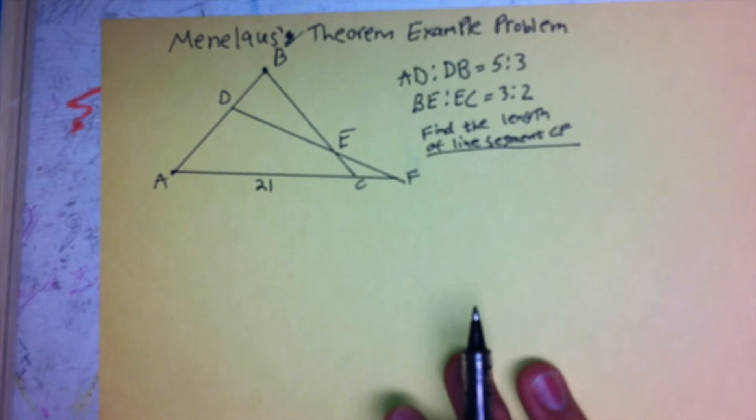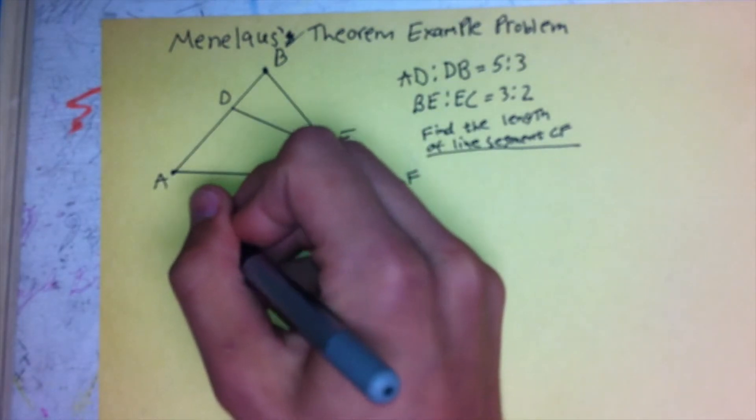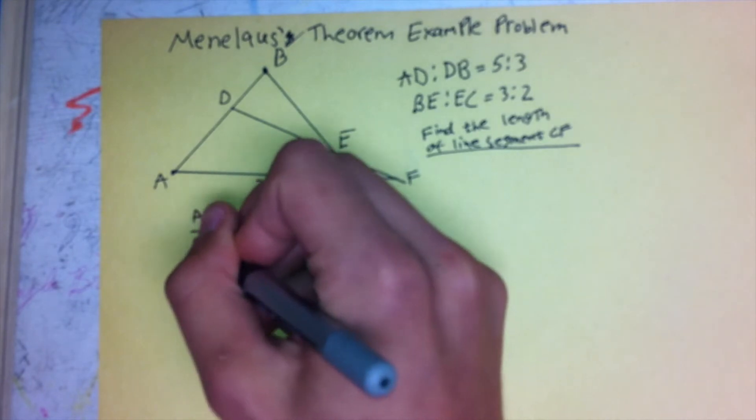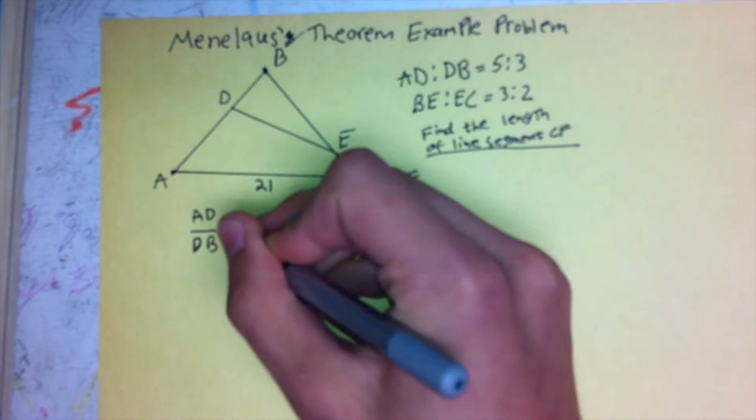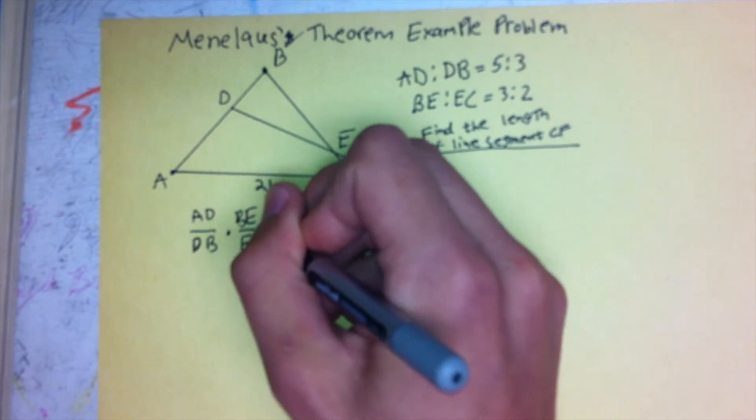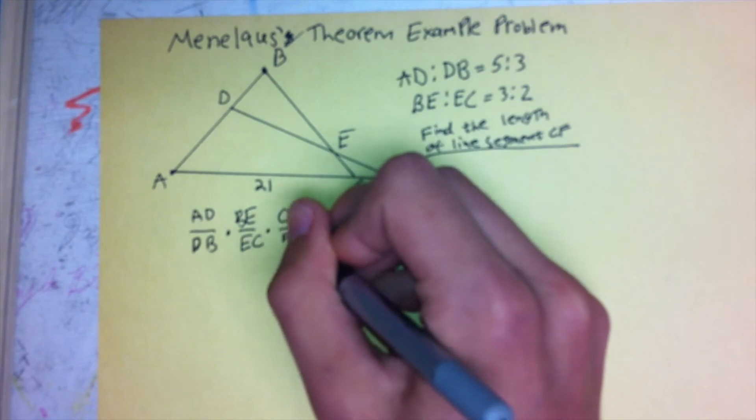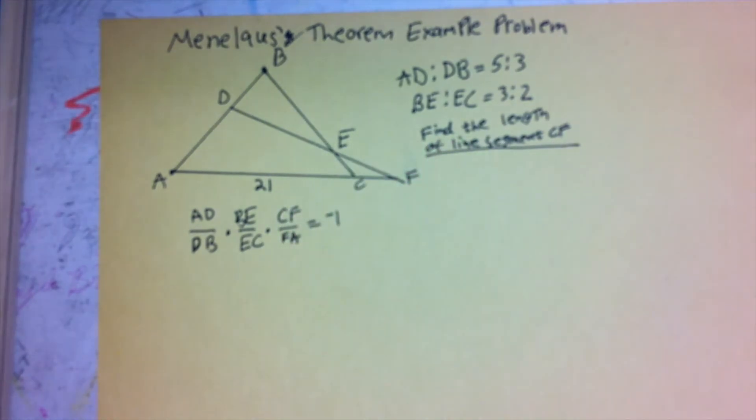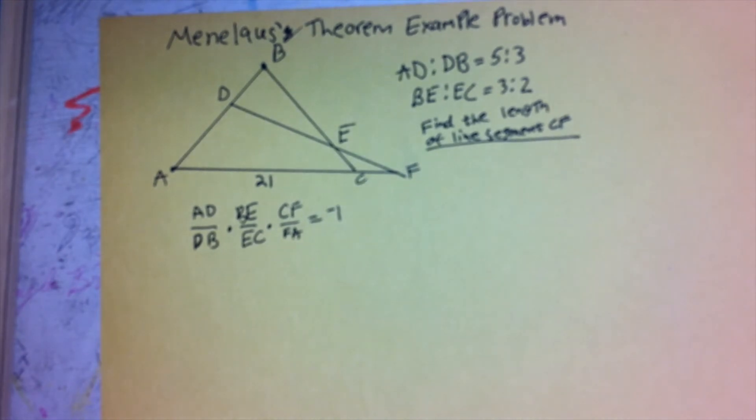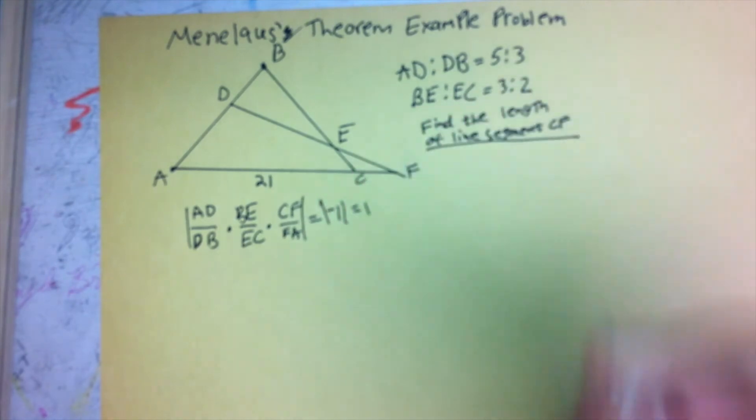So the first thing we're going to do is set up the equation that we need using Menelaus' Theorem. Starting from vertex A, we have AD divided by DB times BE divided by EC times CF divided by FA equals negative 1. And since we really don't feel like dealing with the negatives, we're just going to take the absolute value of both sides and say that that's equal to 1.